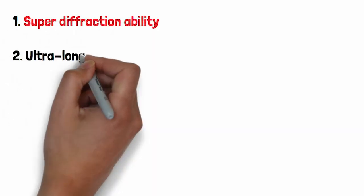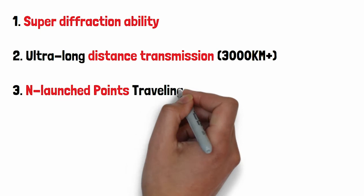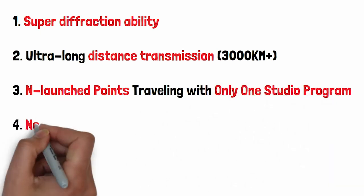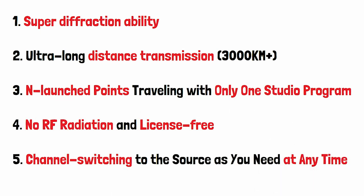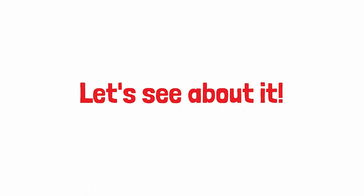The five advantages of FM User STL system are: first, super diffraction ability; second, ultra long distance transmission over 3,000 kilometers; third, coverage of multiple transmitting points with only one stereo program; fourth, no RF radiation and license-free; fifth, channel switching to any source as needed at any time.